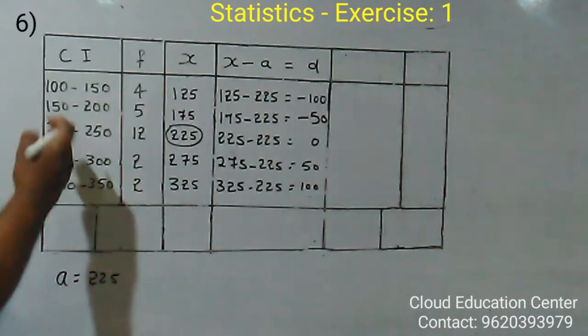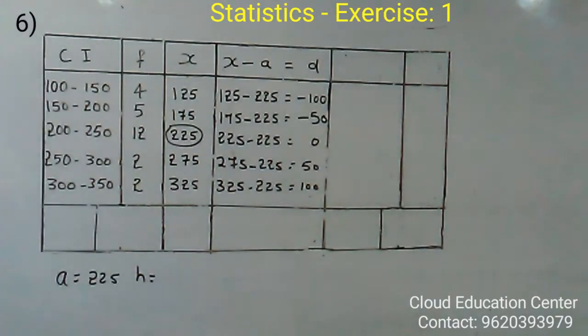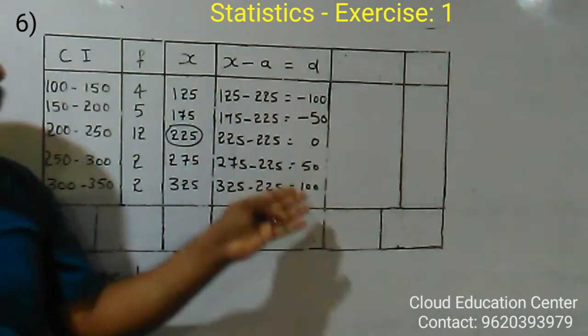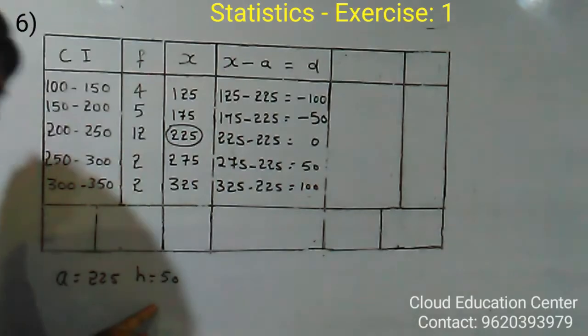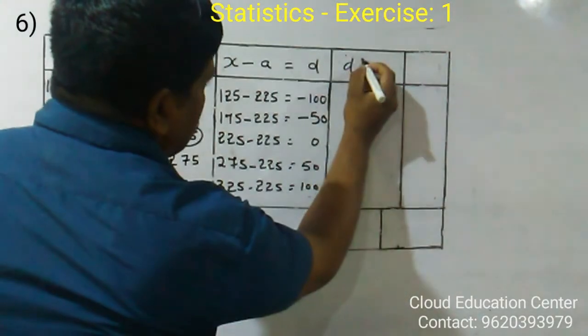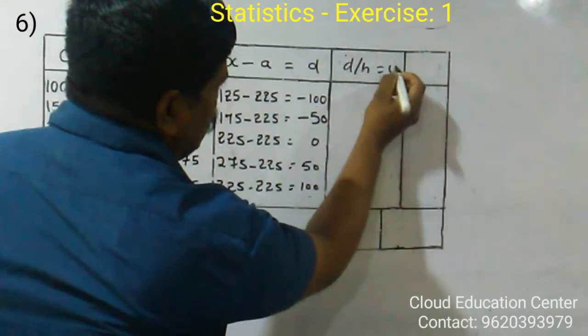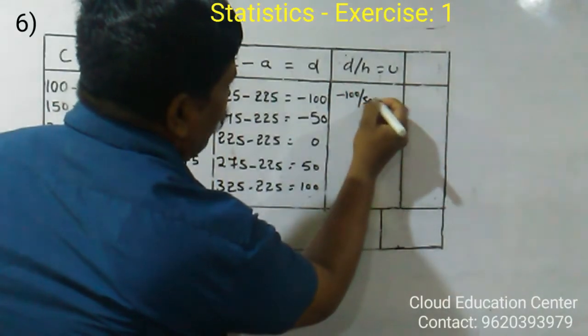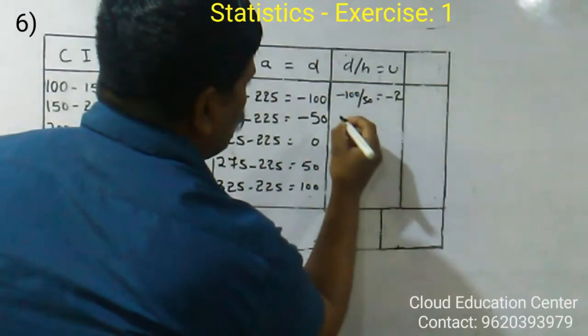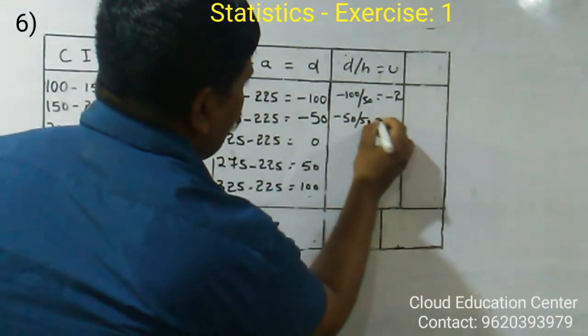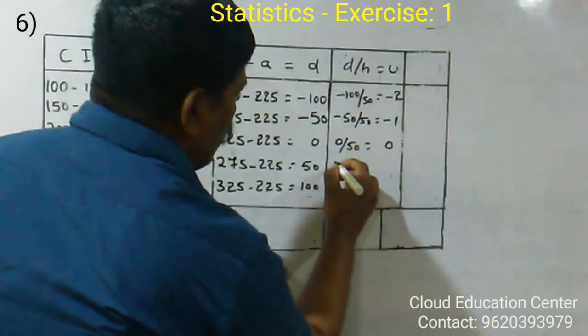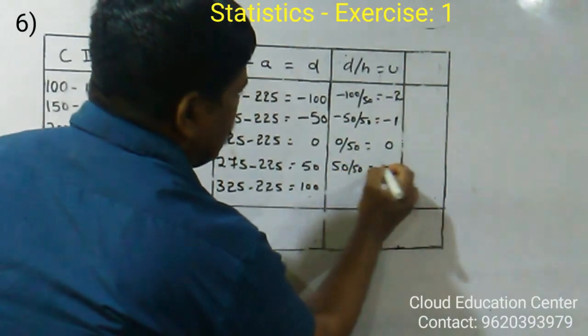So now here H. Here H is the class size. That is 150 minus 100 is 50. So it is 50. Here I will take a common divisor, that is H is equal to U. That is H is equal to 50. It is minus 100 by 50 is equal to minus 2. And minus 50 by 50 is equal to minus 1. 0 by 50 is equal to 0. 50 by 50 is equal to 1. 100 by 50 is equal to 2.